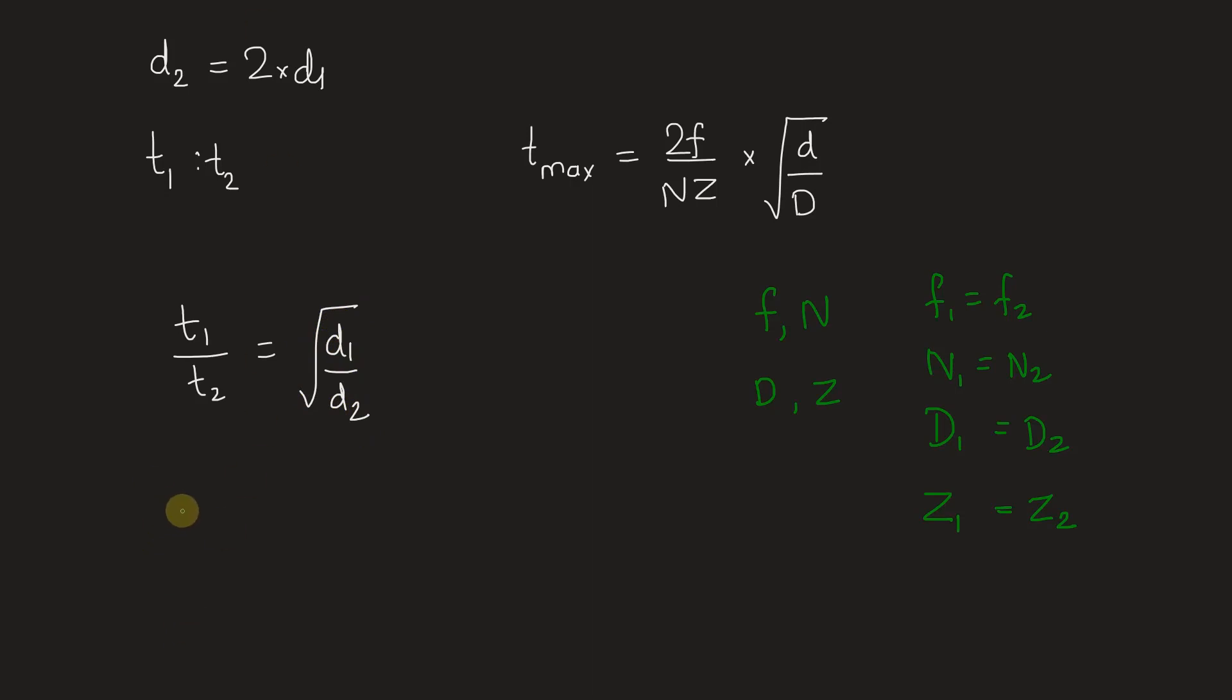Let's substitute and find out t1 by t2. We have t1 by t2 equals square root of d1 by d2, which is 1 by 2. Square root of 1 by 2 is 1 upon root 2, which comes out to be 0.707.